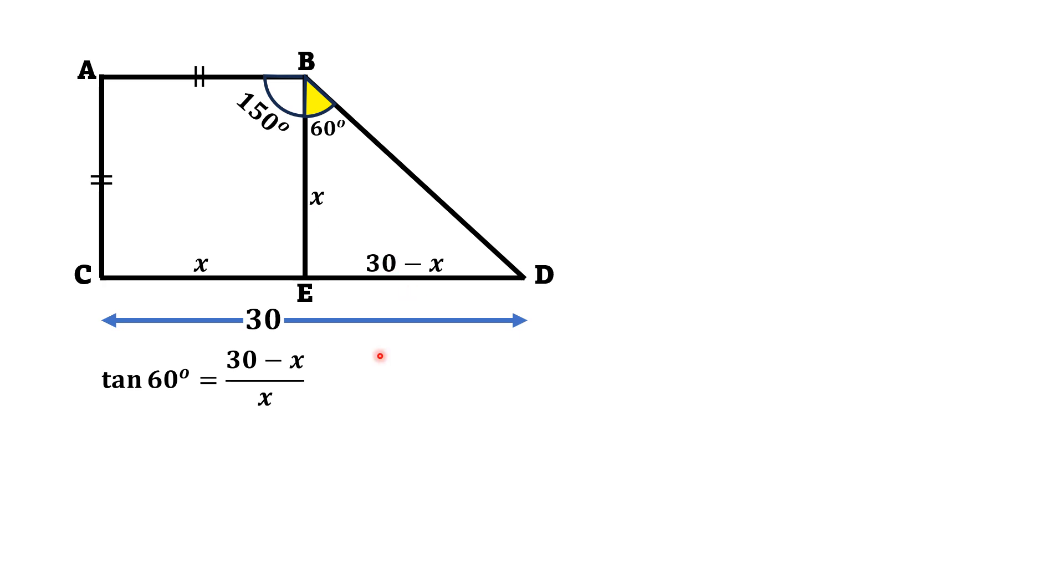Opposite side is 30 minus X and adjacent side is X. So this is equal to (30 - X) over X, and that implies that (30 - X)/X is equal to square root of 3, because tangent of 60 degrees is square root of 3.